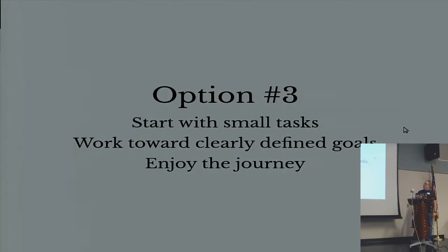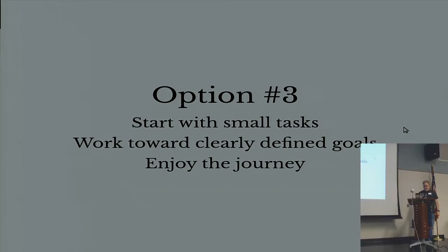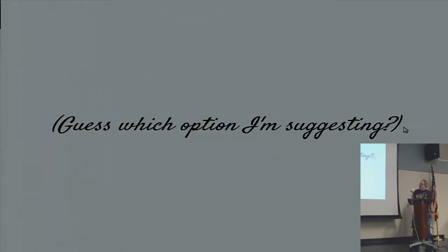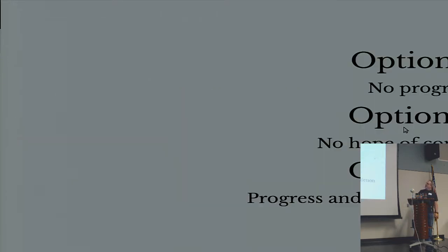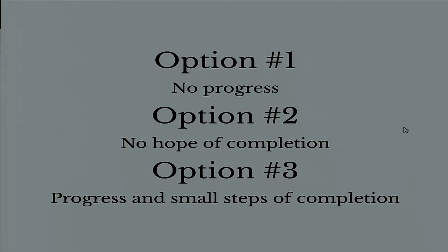Option three is where you start with small tasks, work toward clearly defined goals, and enjoy the journey. With option one there's no progress; option two has no hope of completion; whereas option three gives you progress in small steps of completion. Guess which one I'm going to recommend?